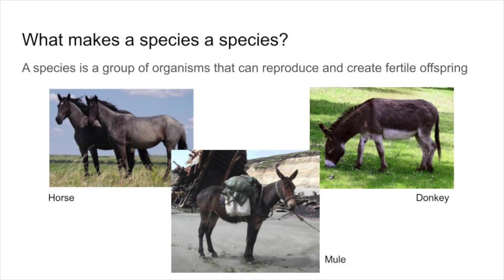An example here would be a horse. A horse can mate with another horse and create another horse. Likewise, a donkey mating with a donkey can make another donkey. What is not considered a species is a mule. A mule is actually a hybrid of a horse and a donkey, and that mule cannot create any offspring — it is infertile. Biologically speaking, a horse has 64 chromosomes and a donkey has 62 chromosomes, and that is not a compatible number of chromosomes for your offspring to be making more offspring.